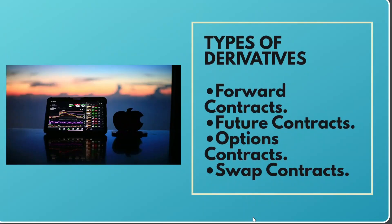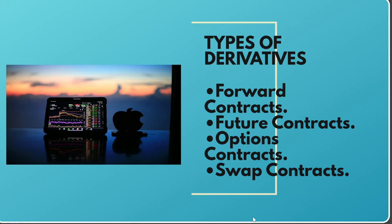Types of Derivatives: Forward Contracts, Future Contracts, Options Contracts, and Swap Contracts.